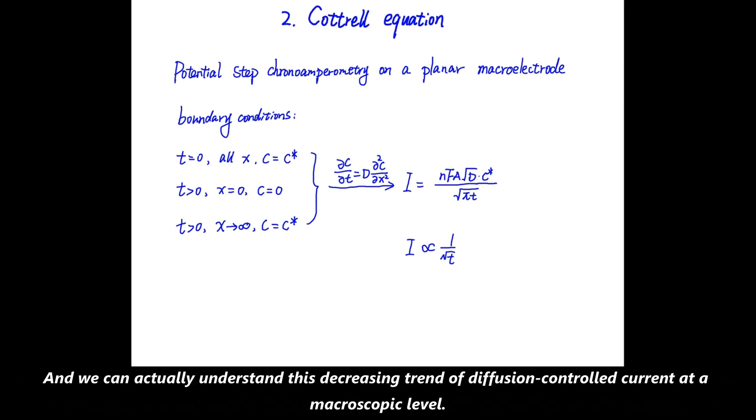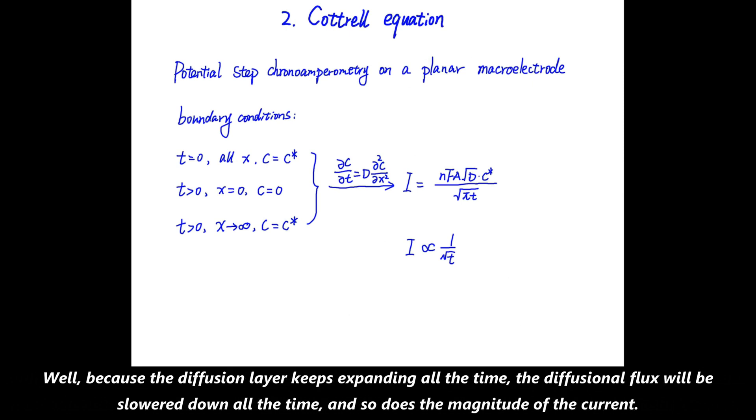And we can actually understand this decreasing trend of diffusion-controlled current at a microscopic level. Well, because the diffusion layer keeps expanding over time, the diffusion flux will be slowed down over time, and so does the magnitude of the current.